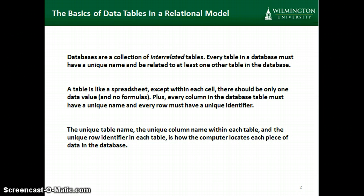A table in a database is like a spreadsheet, except within each cell there can only be one data value. So for instance, we can't cram two phone numbers into a single cell. And unlike a spreadsheet, a cell is not going to contain a formula. Every column in a database has to have a unique name, and every row in a database has to have a unique identifier.